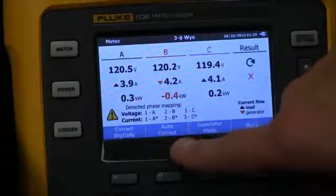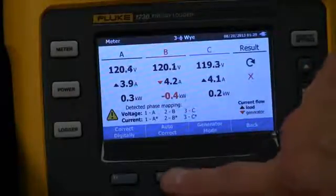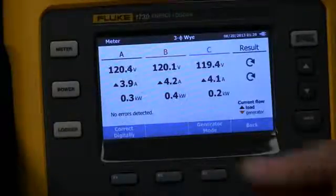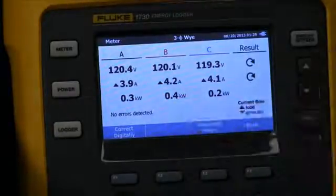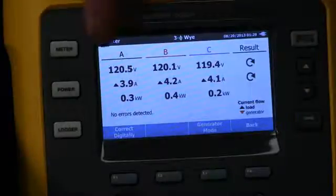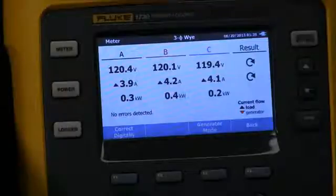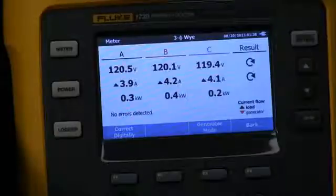I can go ahead and hit the auto correct button here. Once I select this, it will then go ahead using the electronics inside the device, change that around so now I'm getting a proper signal and all of my connections are set up properly so now I know that I've got good data coming in for this energy report or this load study.